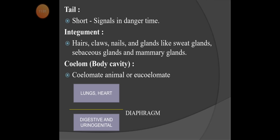The integument is the outer layer of the body, which includes furry hairs and claws (sharp nails at the tip of the fingers). Glands include sweat glands producing sweat, sebaceous glands producing oil throughout the body, and mammary glands, which produce milk for the young ones.